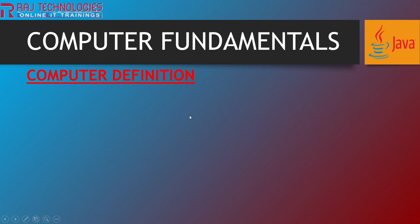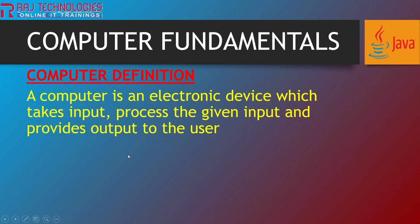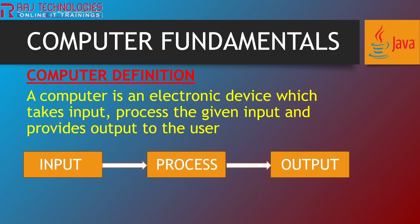So first of all let us understand what is this computer and how to define it. A computer is an electronic device which takes input, processes the given input, and provides output to the user. So here we are going to have the input, we are going to process it, and then we are going to provide the output to the user.